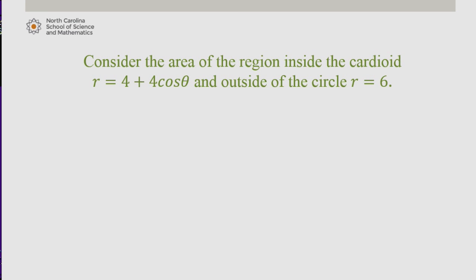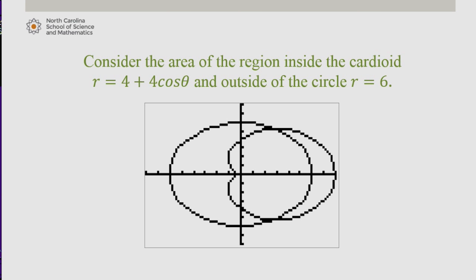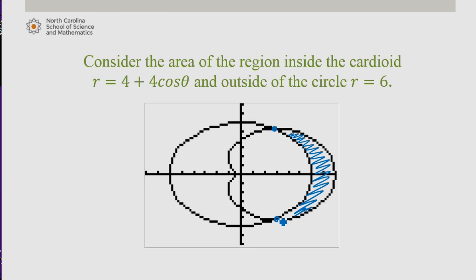It's always a good idea to graph the curves and investigate where they actually intersect. The circle is pictured here and the cardioid here. I'm interested in the area of the region inside the cardioid but outside the circle. So I'm looking for the theta values where the two graphs intersect.